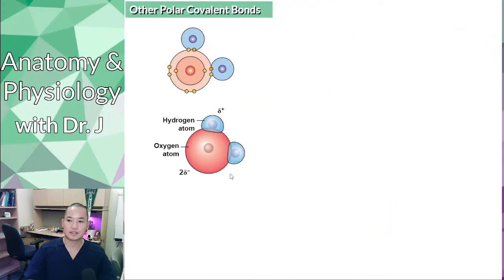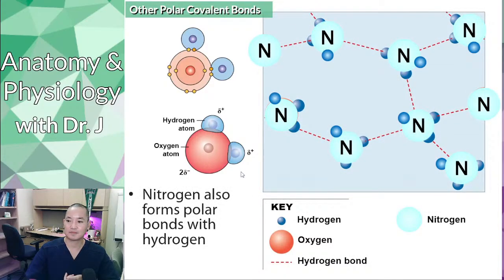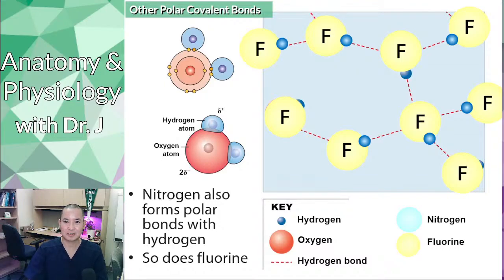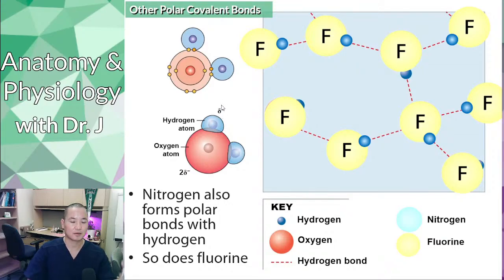There are other types of polar covalent bonds — it's not just about water. Things like nitrogen can also form polar covalent bonds with an unequal sharing of electrons with hydrogen, and same with fluorine. This is why a lot of people get confused between hydrogen bonds and polar covalent bonds — they think that because it involves hydrogen atoms, it must be a hydrogen bond, which isn't quite correct. Polar covalent bonds refer specifically to the unequal sharing of electrons between two atoms, which can involve other elements as well.